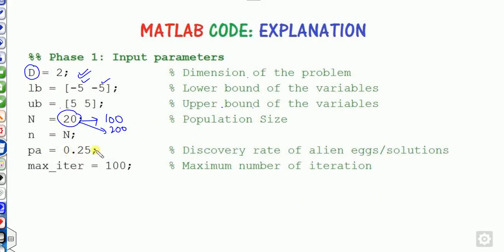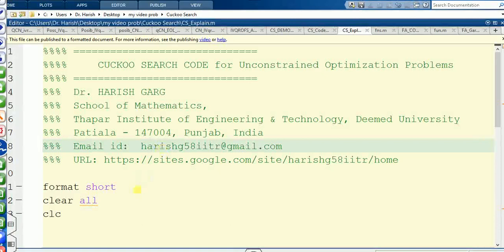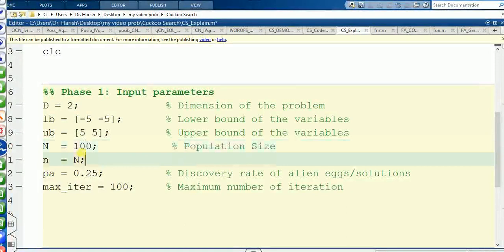You can change the maximum iterations to 500 or 700 as per your convenience. You can simply copy this text and paste it into your MATLAB file. You can change the population size to 100, 50, or 20 — there is no problem. These are the initialization parameters you can adjust freely.